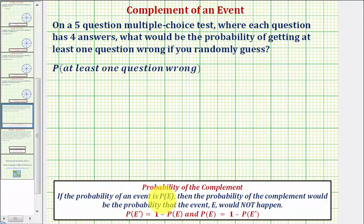If the probability of an event is P of E, then the probability of the complement would be the probability that the event E would not happen. And for the complement of E we use E prime. The probability of an event is equal to one minus the probability of the complement of the event.